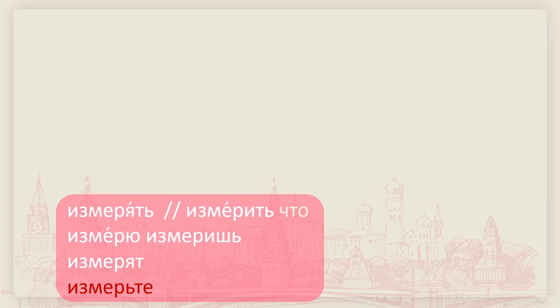首先第一步要量。先来看动词：измерять，变位измеряю，измеряешь，измеряют。对应完成体：измерить，注意重音，变位измерю，измеришь，измерят。完成体和未完成体动词后面都要求第四格，量的东西用第四格形式。命令式：измеряй（未完成体），用软音符号。